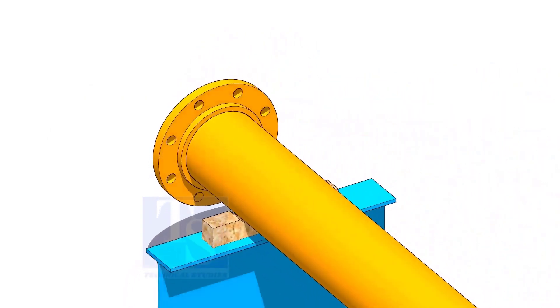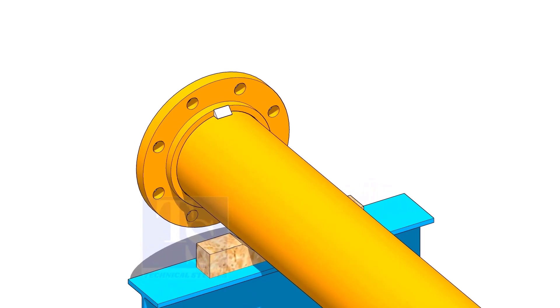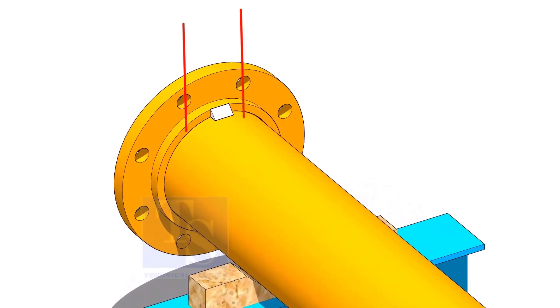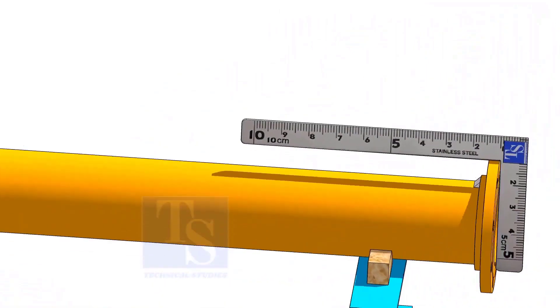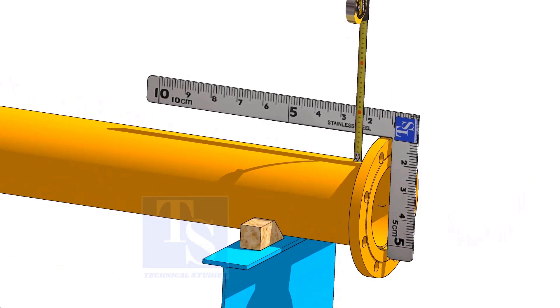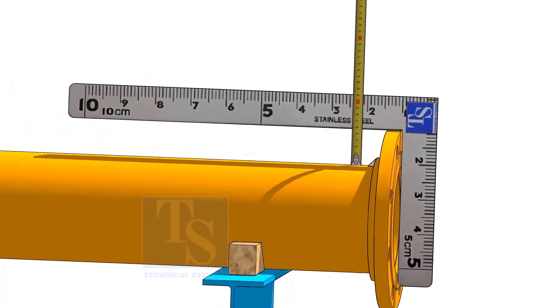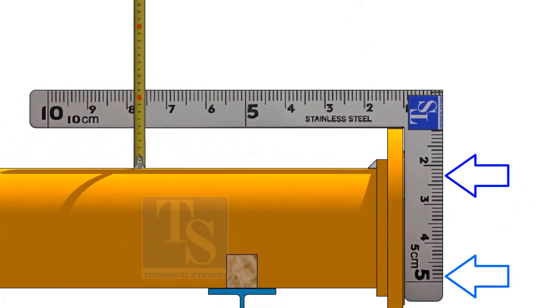Tack weld on the top side. The tack weld shall be between two holes on the flange. Hold a right angle on the face of the flange and check the distance as shown. Adjust the face level of the flange to make the distance equal.